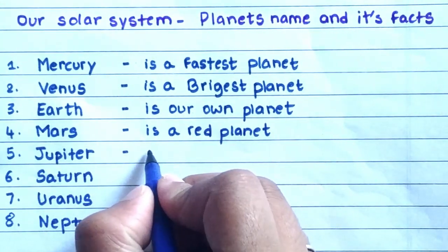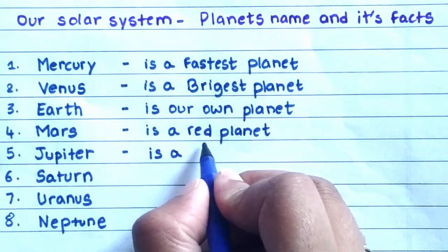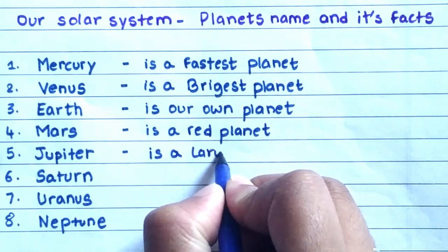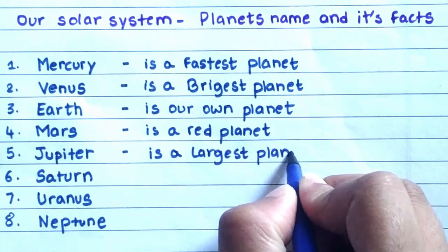Mars. Mars is a red planet. Jupiter. Jupiter is a largest planet.